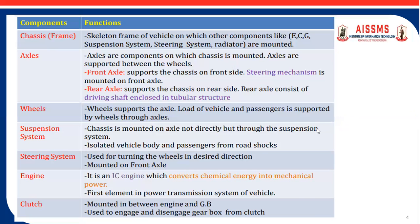The next component is the wheels, which support the axle. The load of the vehicle along with the passengers is supported by the wheels through the axle. The next one is the suspension system. Wheels support the chassis, but the chassis is not directly in contact with the wheels — the suspension system is present in between them. The suspension system isolates the passengers from road jerks and shocks, providing comfort during travel.